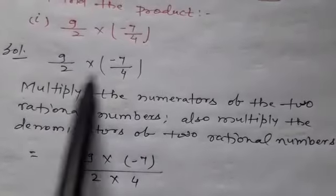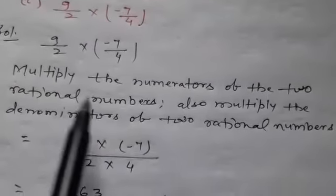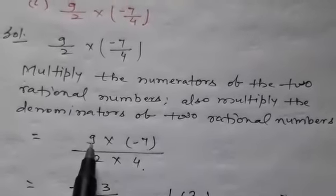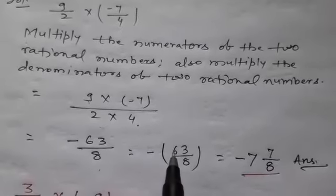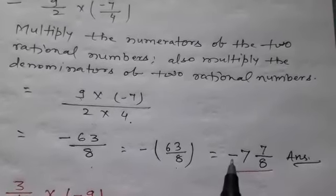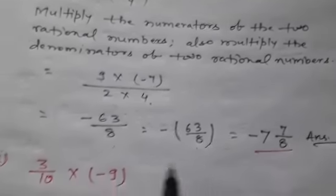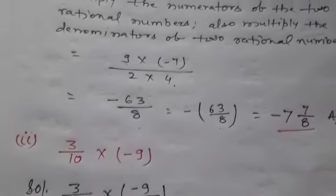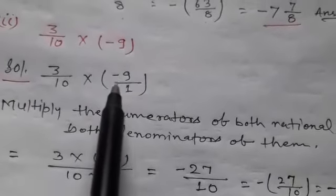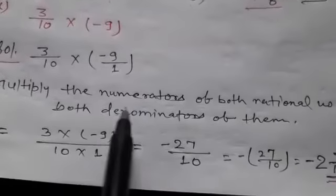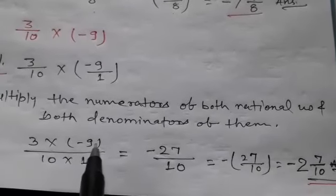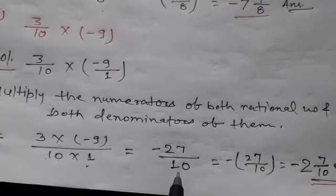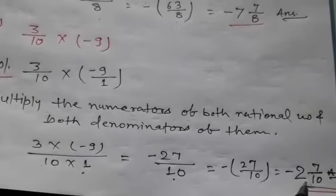Third is: find the product of 9/2 × (−7/4). Multiply the numerators and the denominators: 9 × (−7) = −63, and 2 × 4 = 8, giving −63/8, which equals −7 and 7/8. Second product: 3/10 × (−9). Write −9 as −9/1, then 3 × (−9) = −27 and 10 × 1 = 10, giving −27/10 = −2 and 7/10.